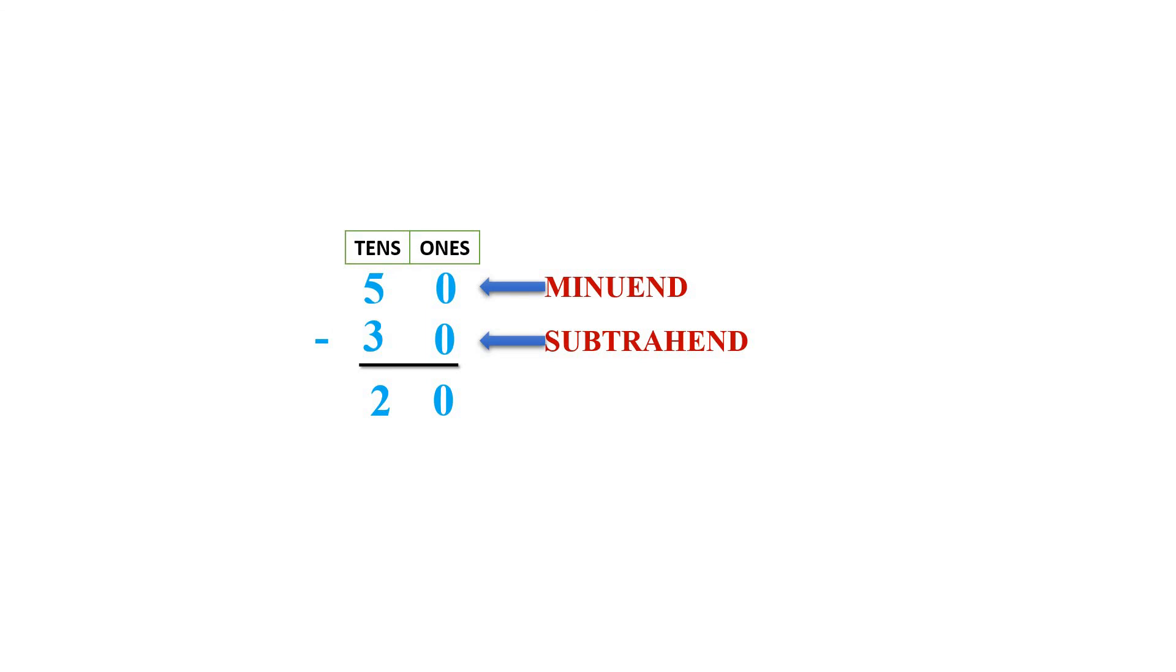So students, here fifty is minuend, thirty is subtrahend, and twenty is difference.